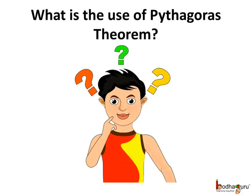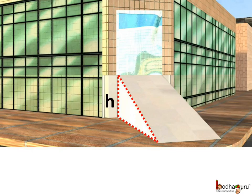What are the uses of Pythagoras theorem in real life? Pythagoras theorem is very useful in real life. For example, there is a slanting plane for vehicles to enter a showroom. Now we want to measure the height of the plane — that is h in the picture.